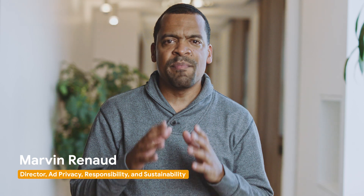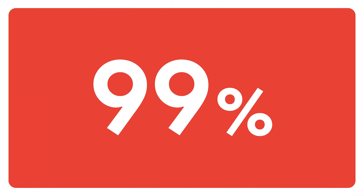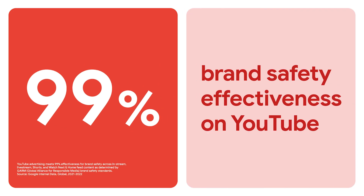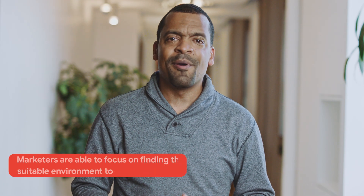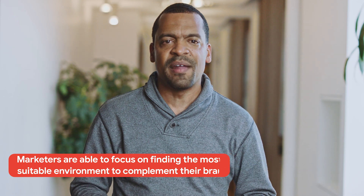The best ad is when it lands the right message for the right customer at the right place and time. That means having your ad appear in the right context for your brand. At YouTube, we've worked hard to ensure your ads are in a safe and suitable environment. In fact, YouTube advertising meets 99% effectiveness for brand safety across in-stream, live stream, shorts, and in-feed content. And we are incredibly proud of that. With that level of safety, marketers are able to focus on finding the most suitable environment to complement their brand strategy.